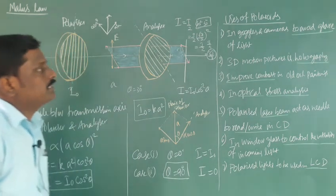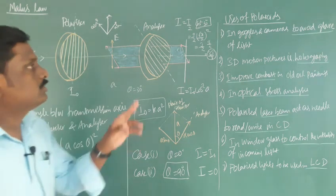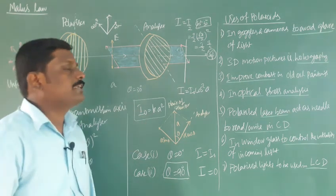In this class we have discussed Malus's Law — that I = I₀ cos²θ — and the uses of polaroids.